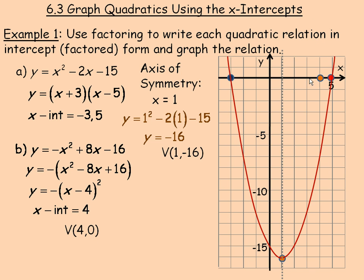Remember the negative means that the parabola opens downward. So we can plot our vertex here at 4, 0. The negative means it opens downward, so that's the vertex. And so it's going to open down like this.